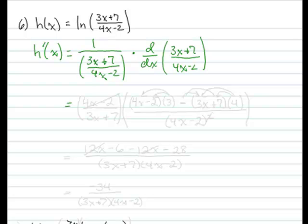So that's going to require a quotient rule. Now here, since we have 1 over a fraction, we can flip it and multiply, so that just becomes 4x minus 2 over 3x plus 7.